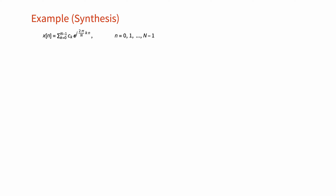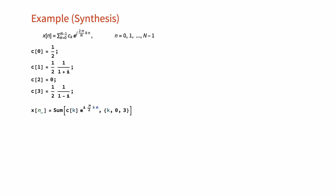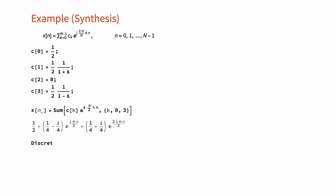Now let's turn our attention to the synthesis formula. Given a set of N Fourier series coefficients c_k of a sequence x[n] with period N, the synthesis formula gives us a perfect reconstruction of the sequence. For example, given the Fourier series coefficients of length N equal to 4, we can easily determine the time domain sequence x[n] by substituting these values into the synthesis formula. Evaluating this expression, we find x[n] and can also plot it to see how it changes over time.